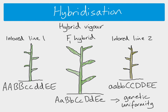This is called hybrid vigour. The reasons why this happens are a little unclear — there are several possible theories. One possible reason is that if it's heterozygous for most of its genes, then any harmful recessive alleles will not be expressed. Because we're going from homozygous parents, every individual produced from these two inbred lines is going to be genetically identical or very similar — they'll be heterozygous and have really similar genotypes, giving us genetic uniformity. All offspring from inbred line one and inbred line two will be heterozygous for many of their genes, genetically uniform, and will show hybrid vigour. That is how hybridisation works in plants.